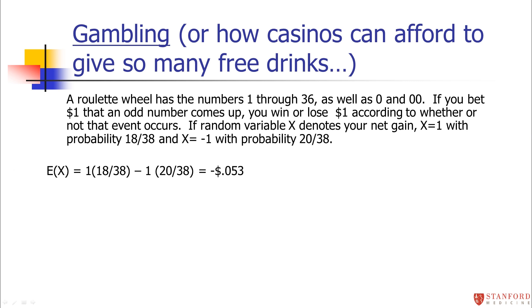You have an 18 out of 38 chance of winning a dollar, and a 20 out of 38 chance of losing a dollar. Unlike the lottery, the chances of winning and losing are purposely stacked to be pretty close to one another. But if that's the probability distribution, the expected value comes out to negative 5 cents. The gambling industry has set the probabilities close enough that sometimes you're definitely going to win — that's what hooks people in. You have to let people win enough to get them hooked.